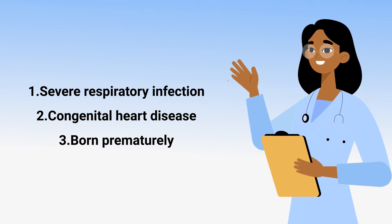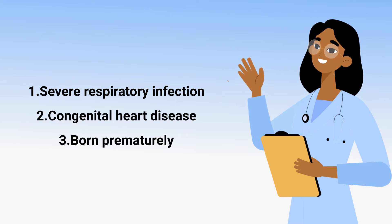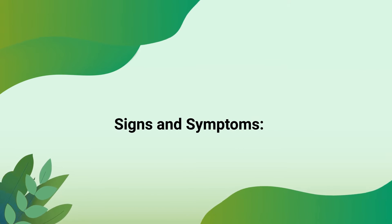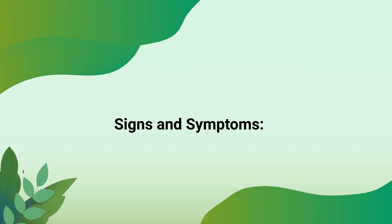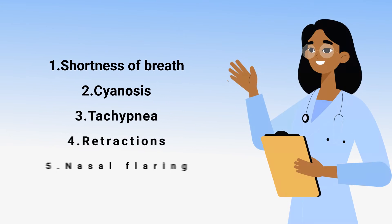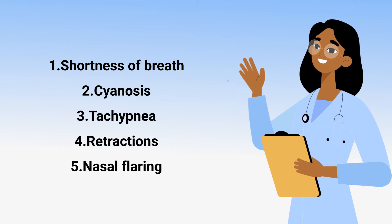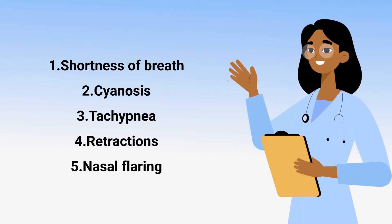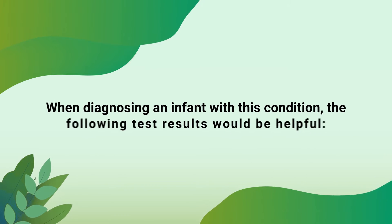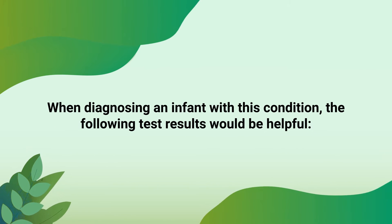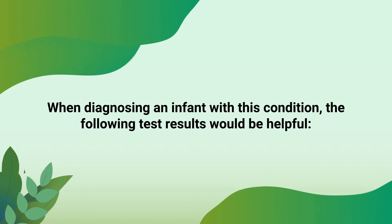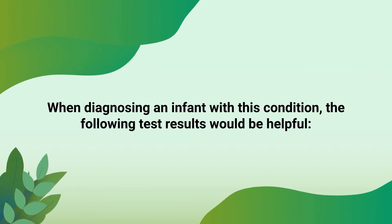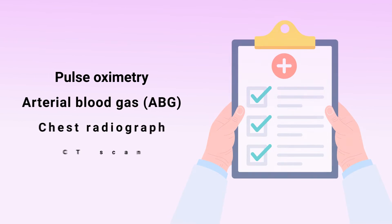The signs and symptoms of bronchopulmonary dysplasia include the following: shortness of breath, cyanosis, tachypnea, retractions, and nasal flaring. When diagnosing an infant with this condition, the following test results would be helpful: pulse oximetry, arterial blood gas, chest radiograph, and a CT scan.